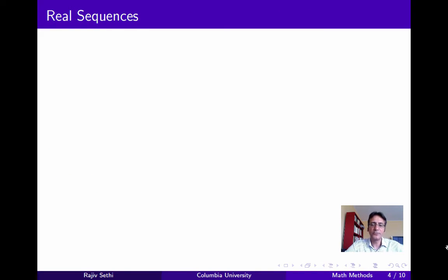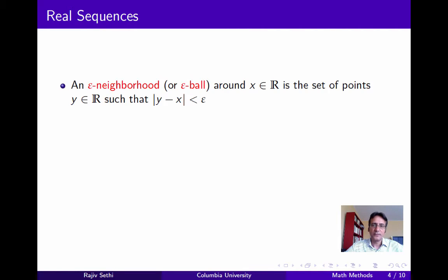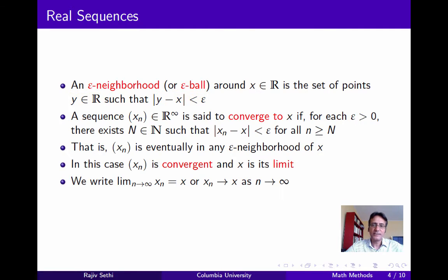Having already defined real sequences and subsequences, let's talk about limits and convergence. We define an epsilon neighborhood or epsilon ball around a point x in the real numbers as the set of points all within a distance epsilon of x. We say that a sequence xn converges to x if for any epsilon positive, however small, the terms eventually enter and remain within an epsilon neighborhood of x. In this case, xn is convergent and x is its limit, with notation shown on the slide.